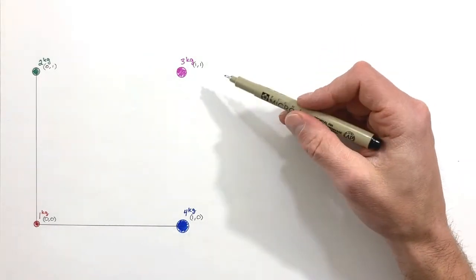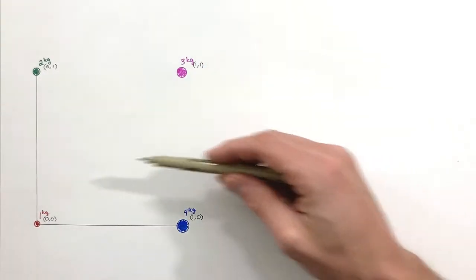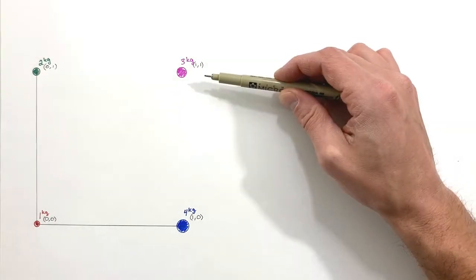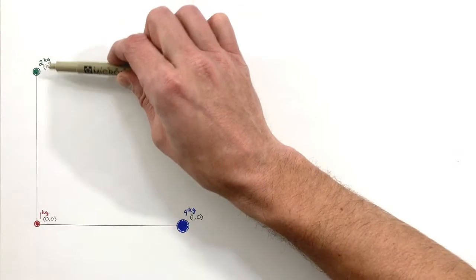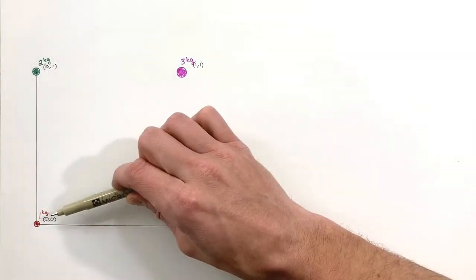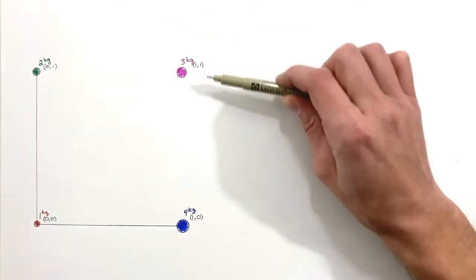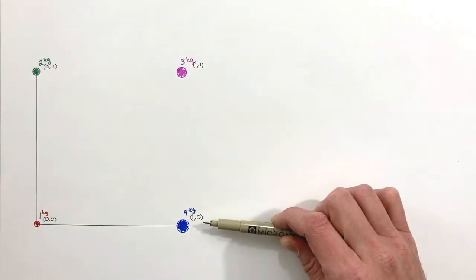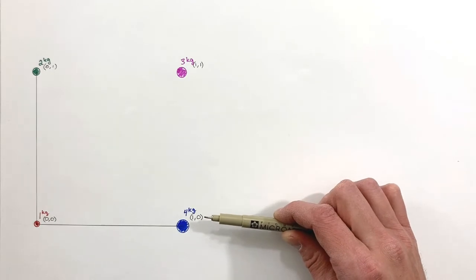Today we're going to look at the center of gravity of four particles. These four particles have been arranged in a square grid that is one meter on each leg. We've got a one kilogram particle, a two kilogram, a three kilogram, and a four kilogram particle. The one kilogram particle is at the origin, the two kilogram particle is one meter above that, the three kilogram particle is at location (1,1), and the four kilogram particle lies along the x-axis one meter from the origin.